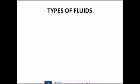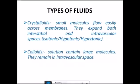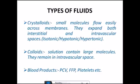You should know about the types of fluids. These are crystalloids, colloids, and blood products. Crystalloids are small molecules; they flow easily across membranes. They expand both interstitial and intravascular spaces. They can be isotonic, hypotonic, and hypertonic solutions. Colloids are solutions that contain large molecules. They remain in intravascular space when infused. Then we have blood products: packed cell volume, fresh frozen plasma, or platelets.